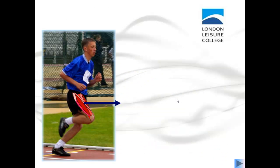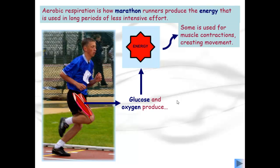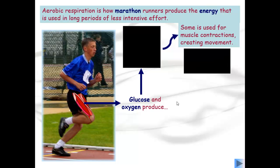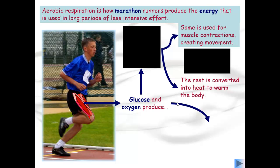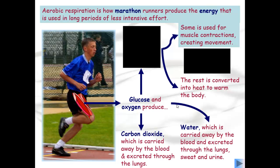For an aerobic athlete, glucose and oxygen produce energy — some is used for muscle contractions to create movement, and the rest is converted into heat to warm the body. The glucose and oxygen also produce water, carried away by the blood and excreted through the lungs, sweat, and urine, as well as carbon dioxide, which is carried away by the blood and excreted through the lungs.